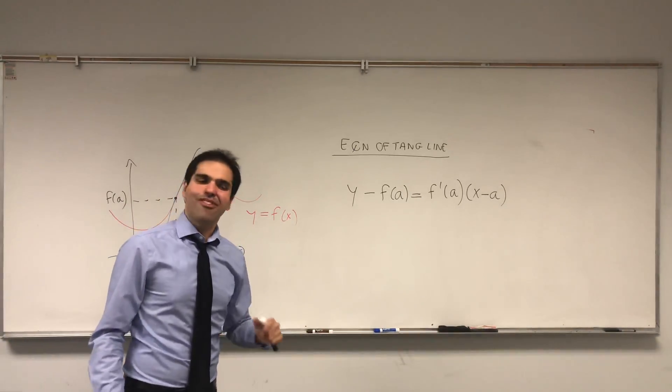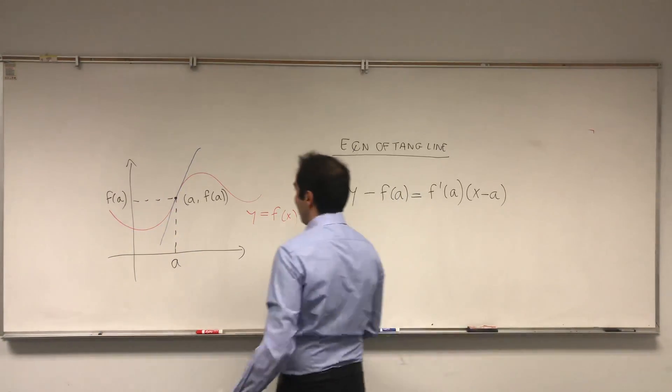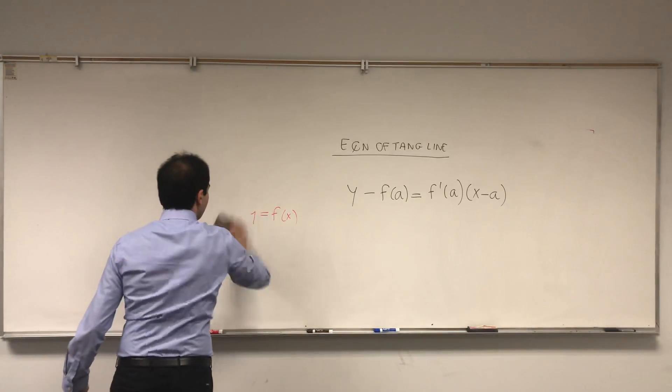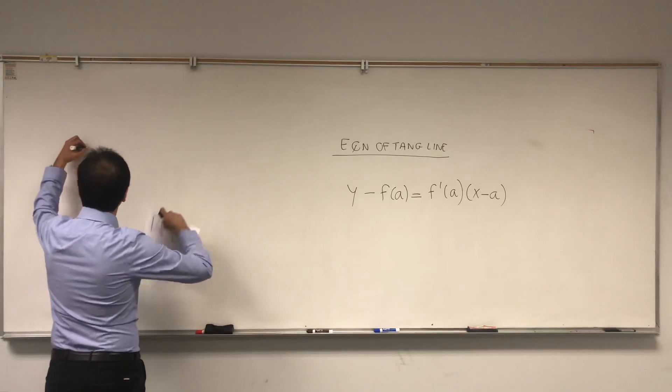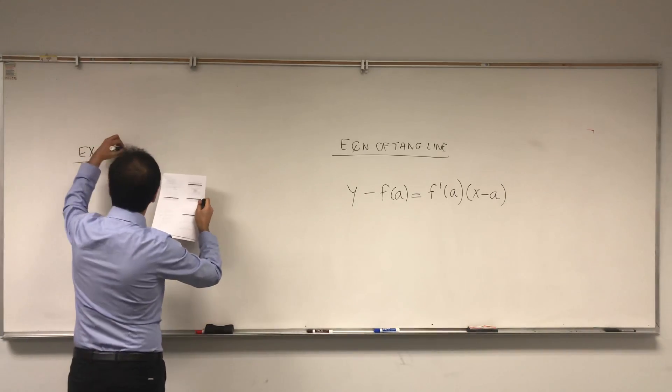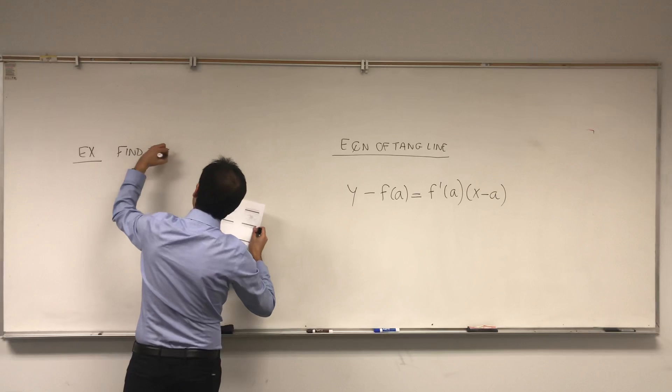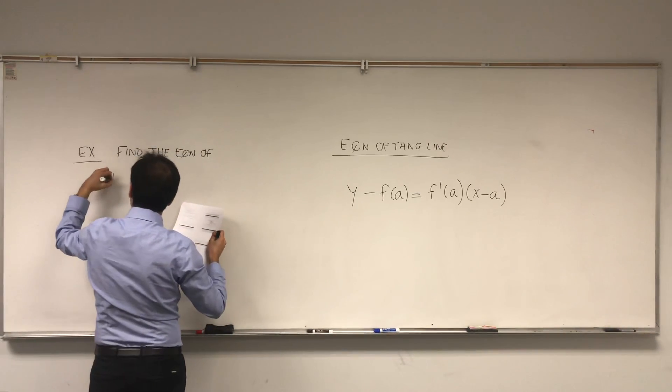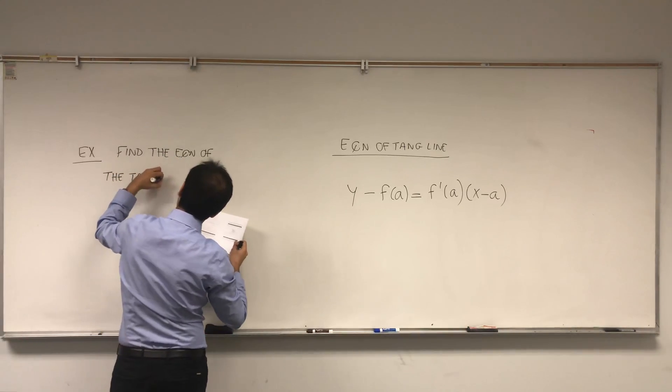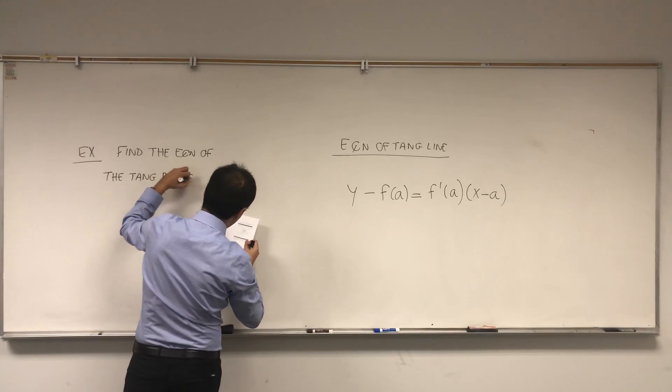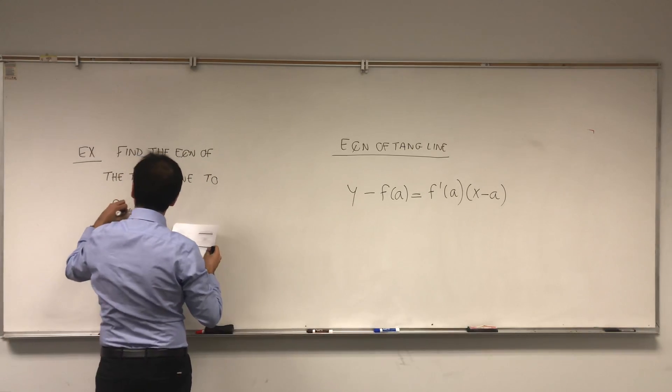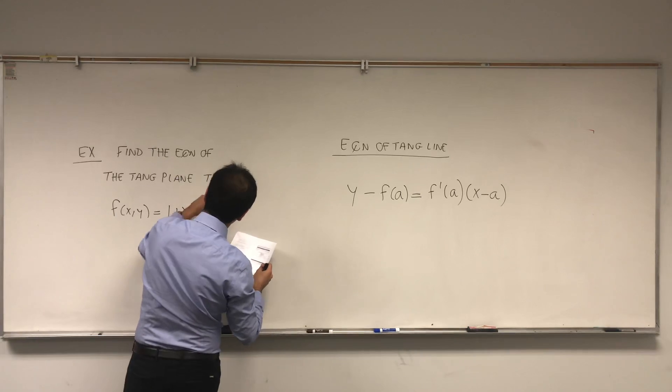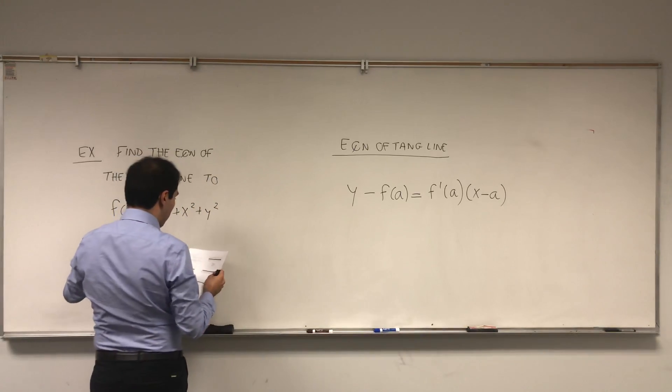For multivariable functions, we have a very similar formula. So now, let's do the following problem. Example: find the equation of the tangent plane to the function f(x,y) = 1 + x² + y² at the point (1,2).